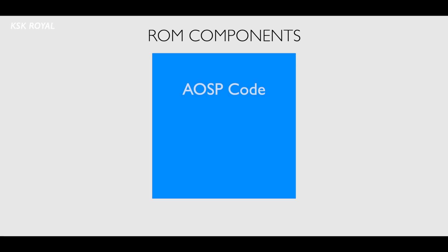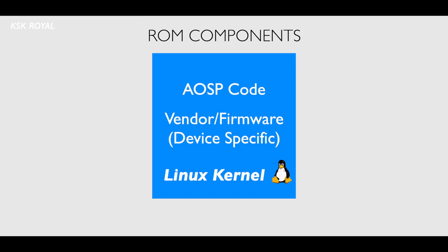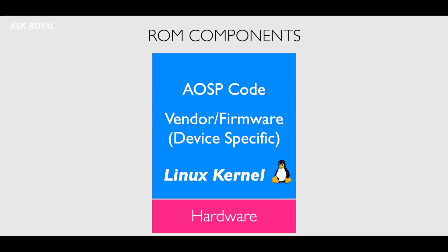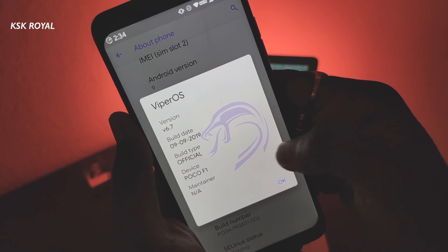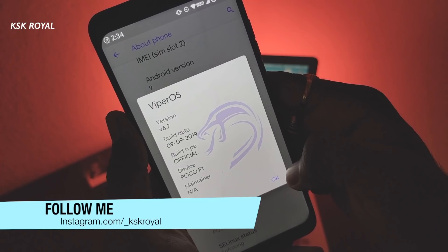One of the biggest components of the custom ROM is the kernel, which is the heart of the ROM or operating system that governs all of the low-level functionalities like CPU, GPU, battery and more. Custom ROM developers use the default generic kernel sources, which are underclocked to normal so that they won't drain much battery life.